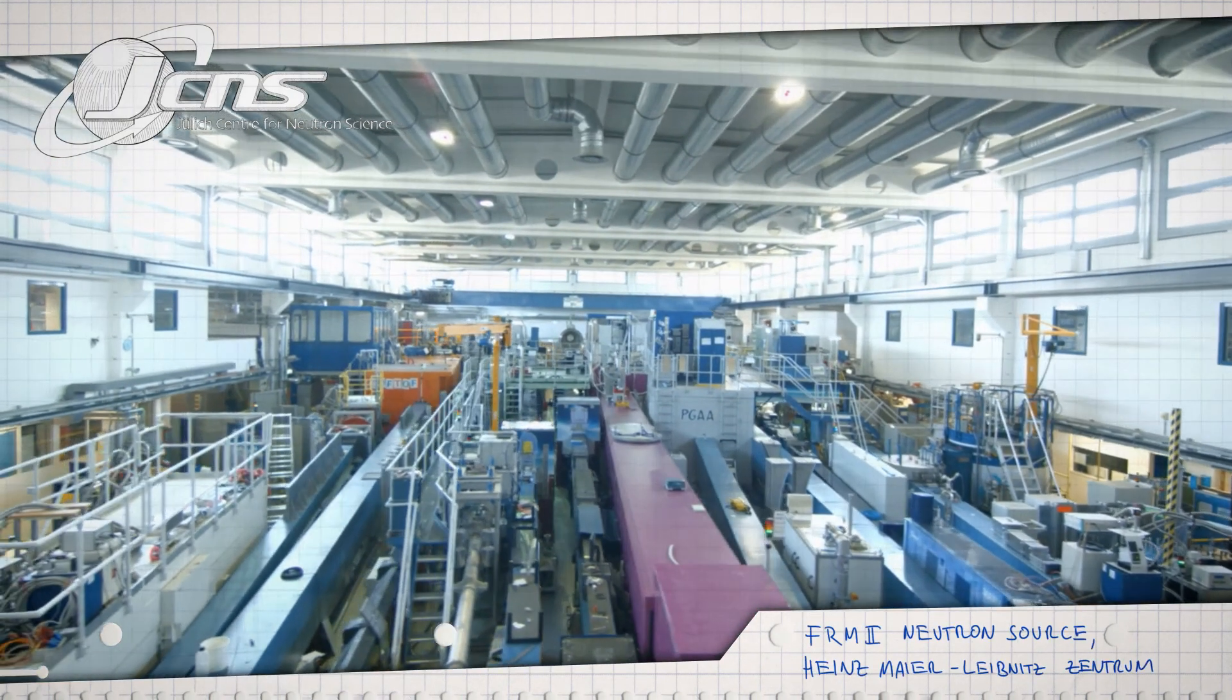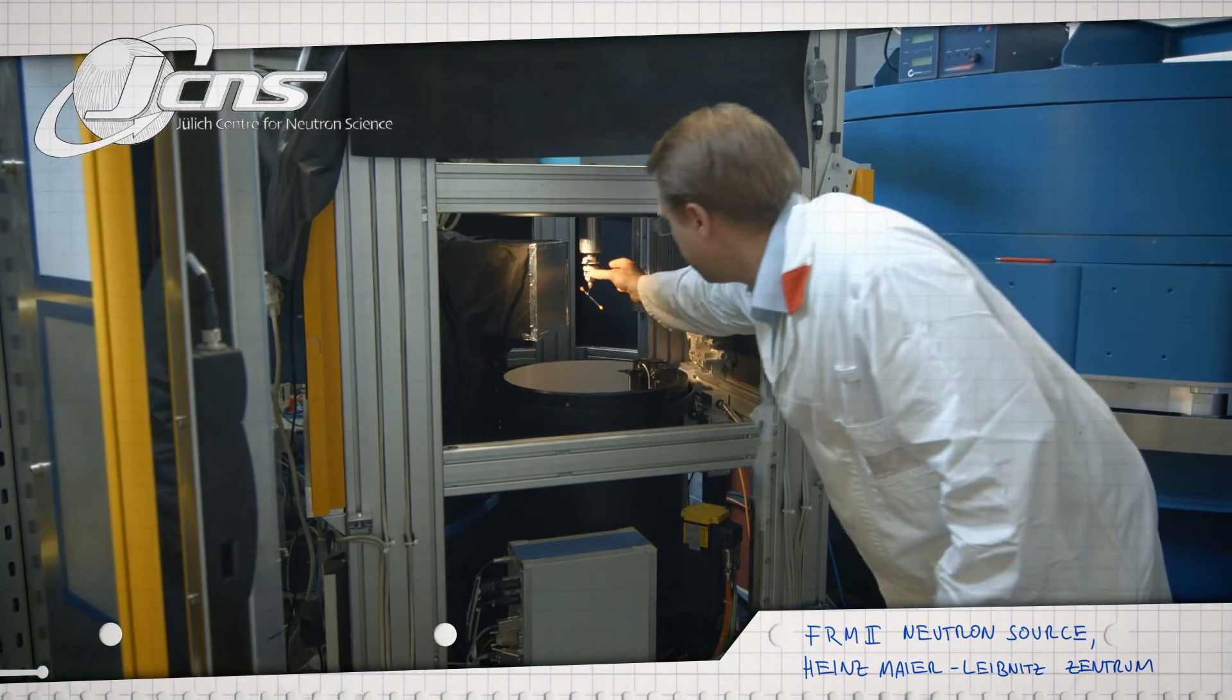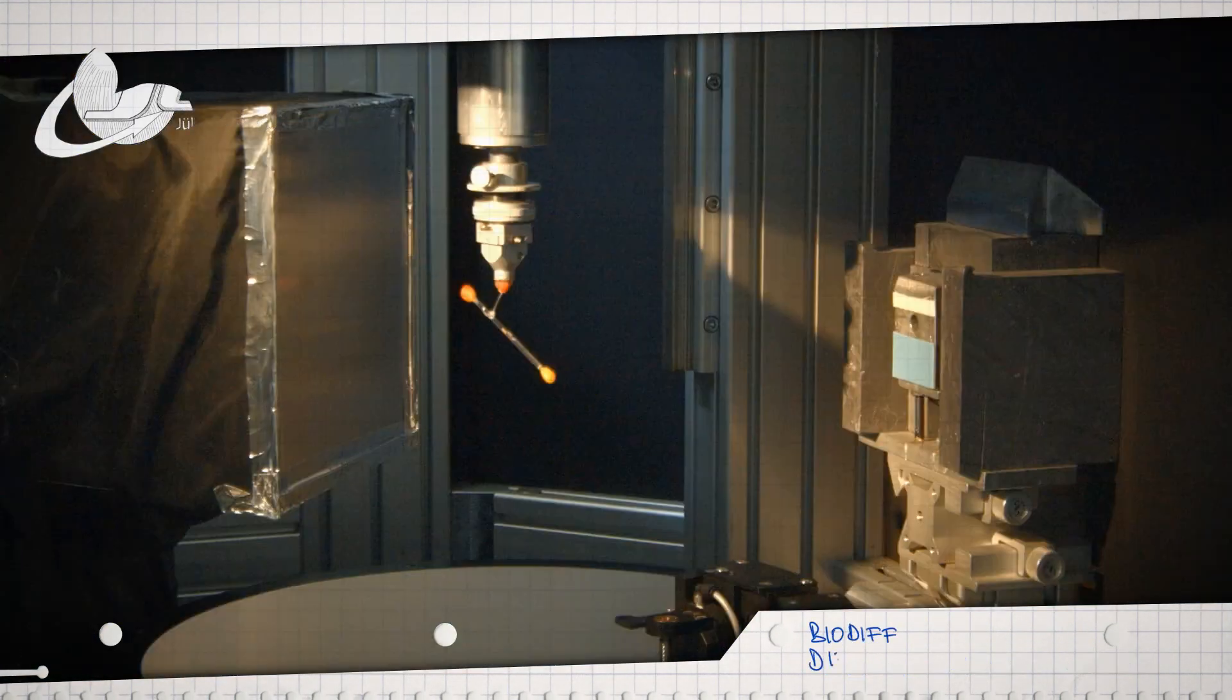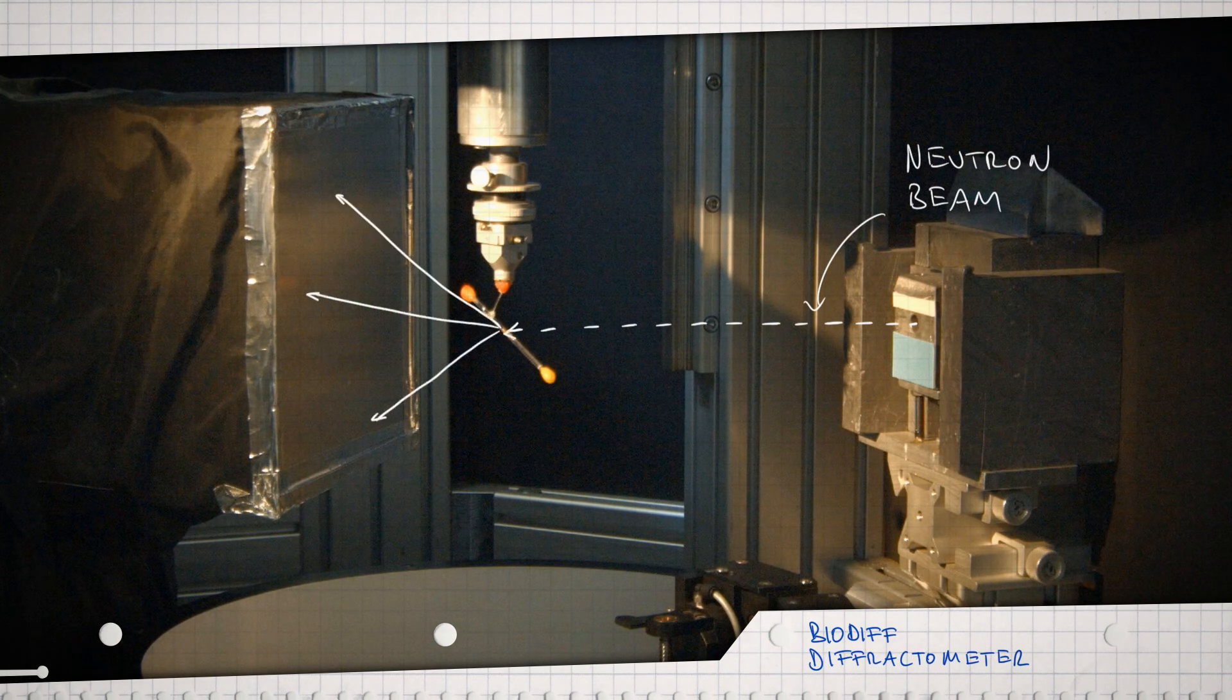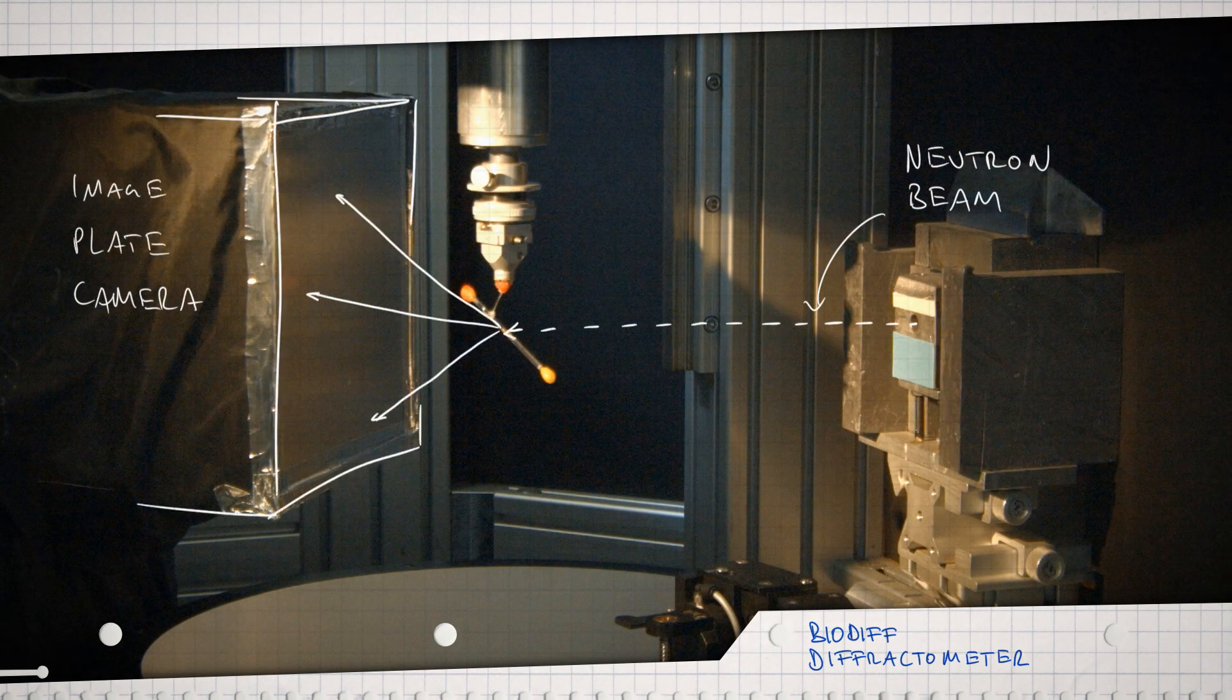At the Jülich Center for Neutron Science, Dr. Schrader conducts experiments to analyze the structure of matter. Neutrons that hit a sample are scattered in all directions and recorded by a detector.